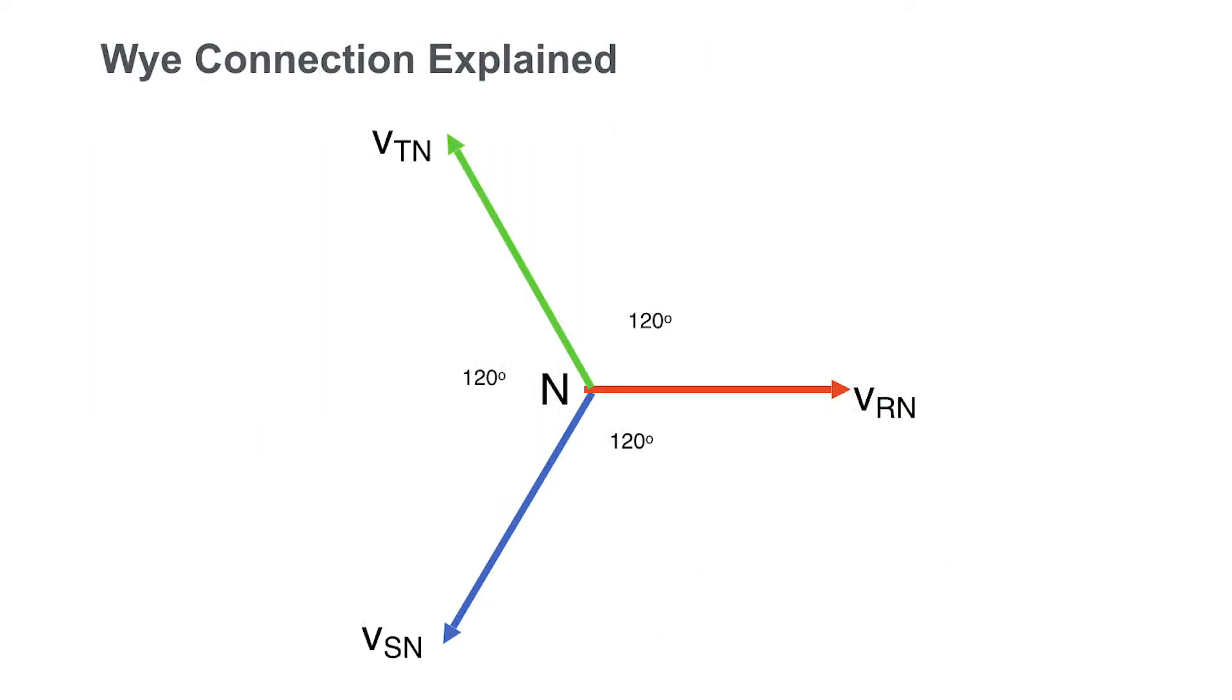This reference to neutral is also why we refer to this as a Y or star connection, because of the Y or star-like shape of the vector diagram.